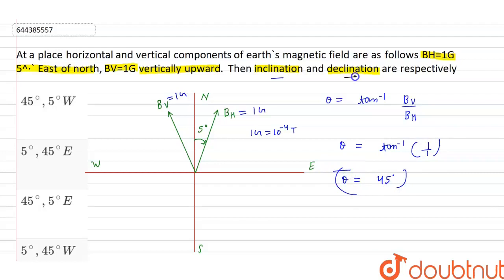And angle of declination is itself given in the question 5 degree east. So declination, 5 degree east.